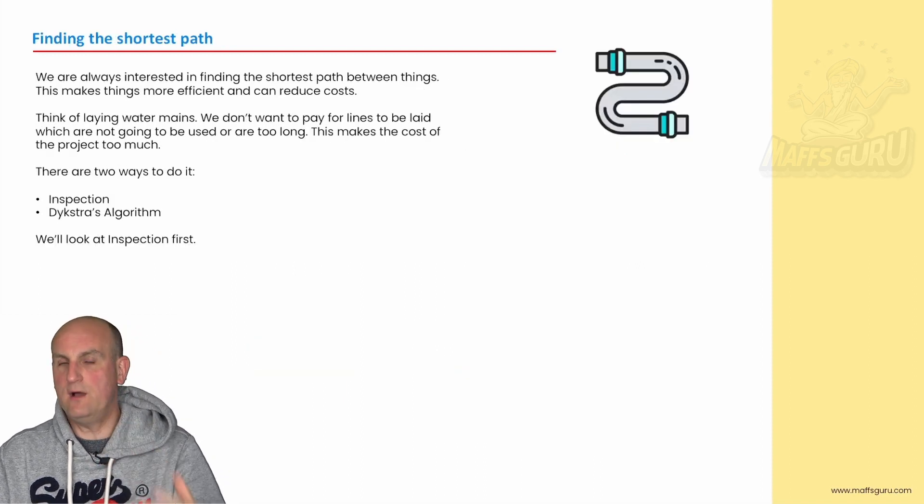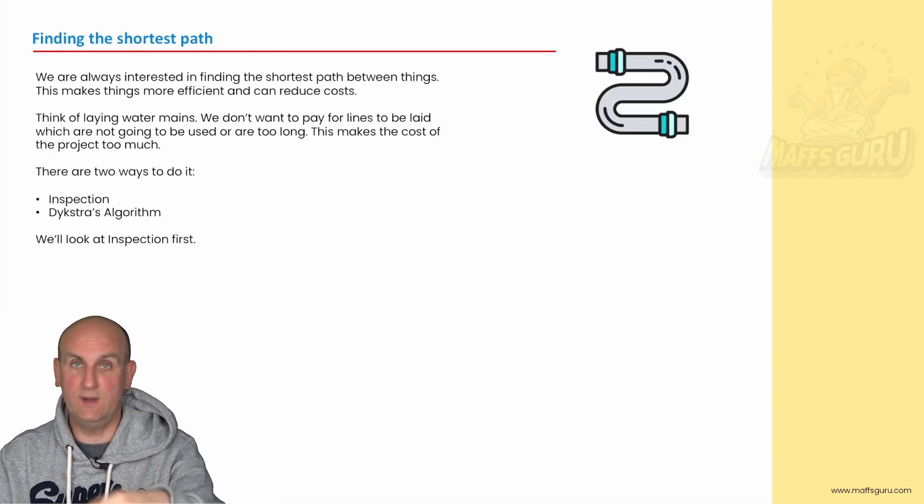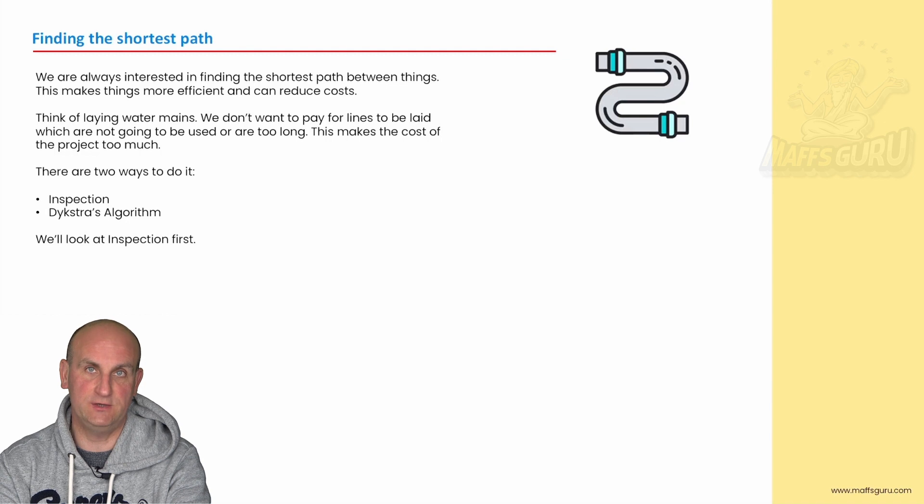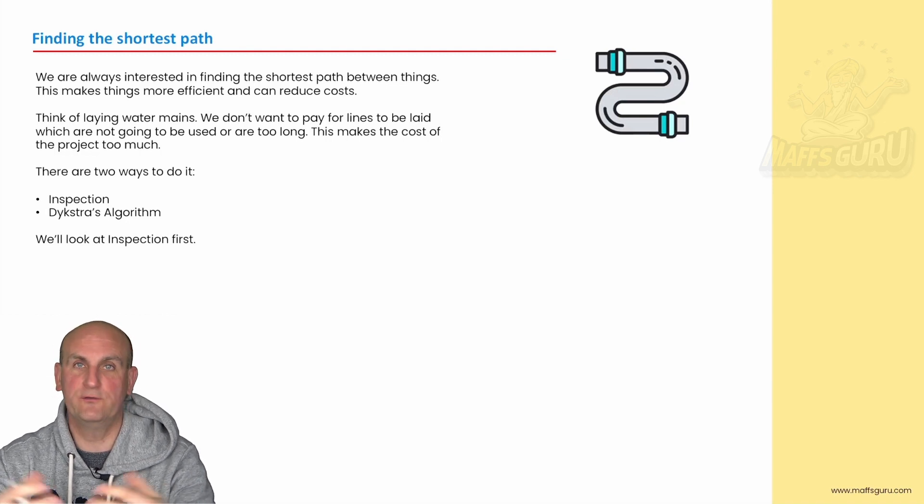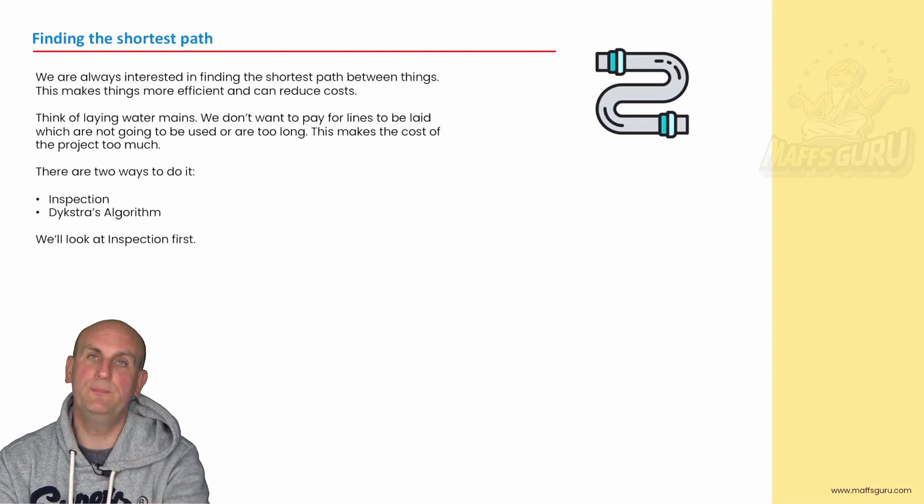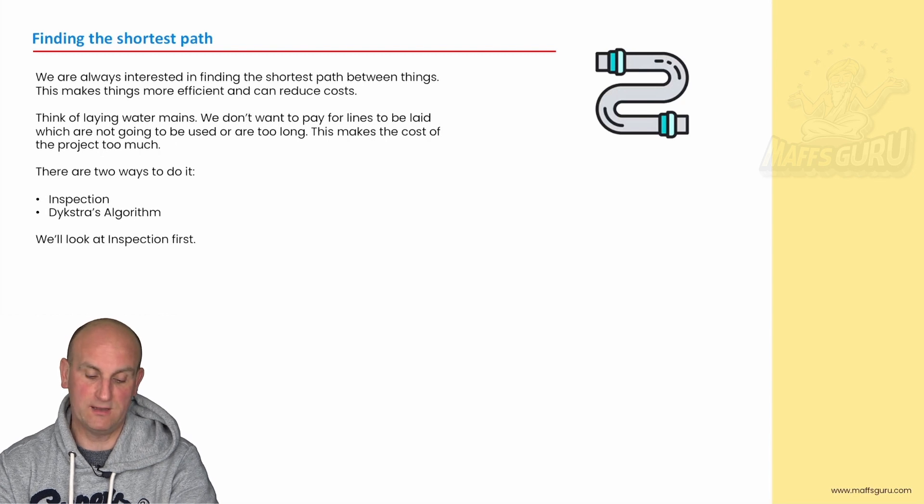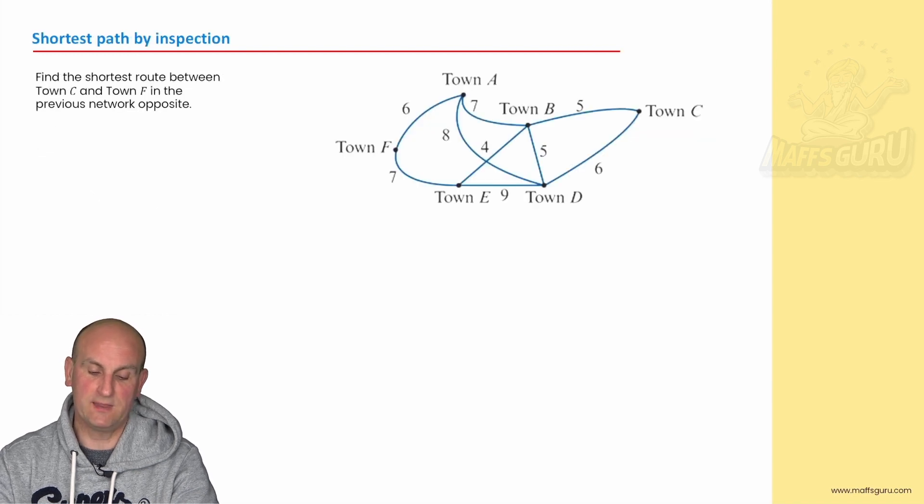Now being able to read these things is awesome, but as I say we may be asked to find the shortest path between two points. And as I've said here there are two ways to do it. One is by inspection and by rights the general maths course should have me just teaching you by inspection. I'm going to teach you some of the unit three and four course because once you get used to this algorithm, and it's massively important, you will be a gun at this stuff. I'm going to teach you Dijkstra's algorithm. Hopefully I've spelt his name right there. But let's look at Dijkstra's algorithm first.